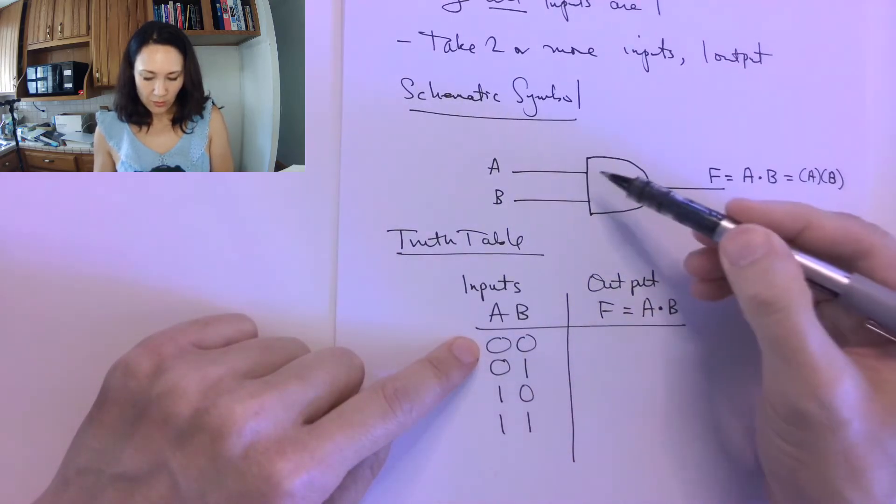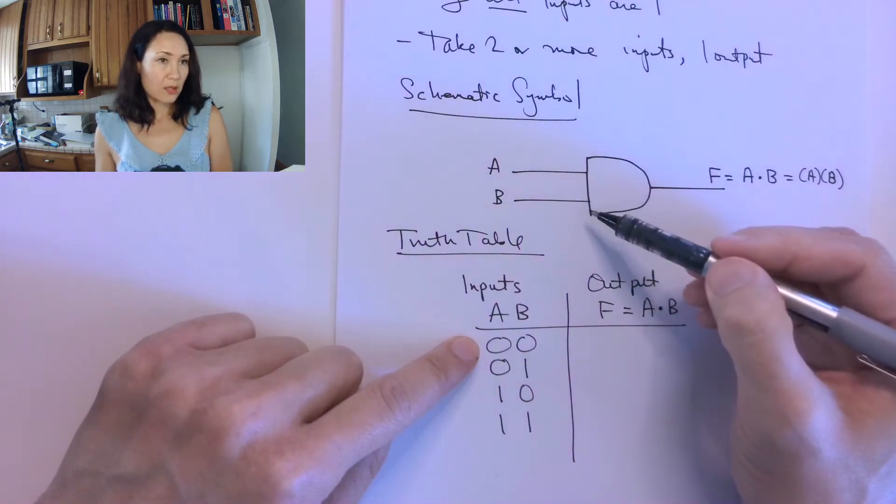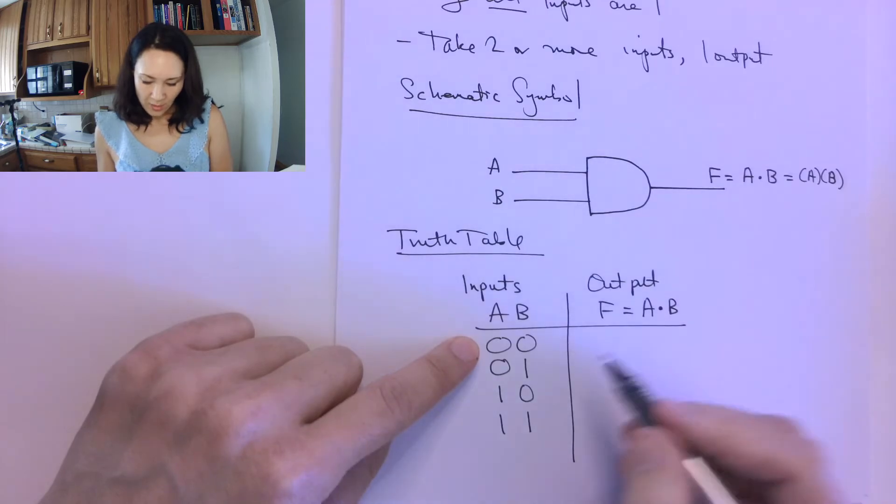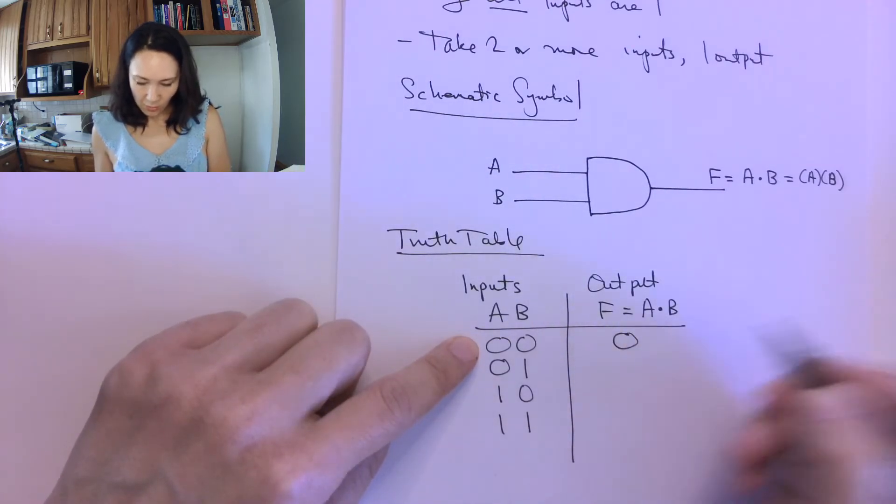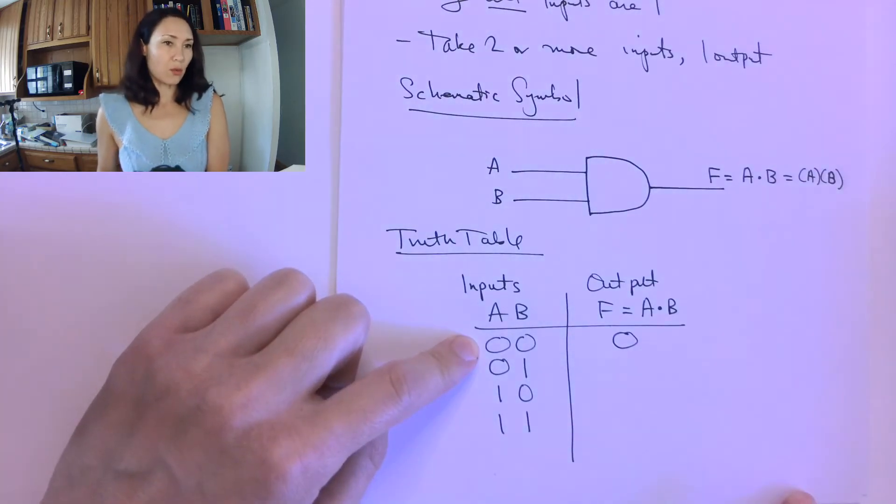So this is the case when both zeros are coming into our inputs A and B. And our output for the AND gate is going to be 0, because it's only going to output 1 if all of the inputs are 1.